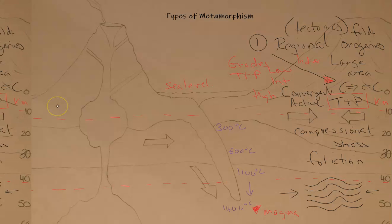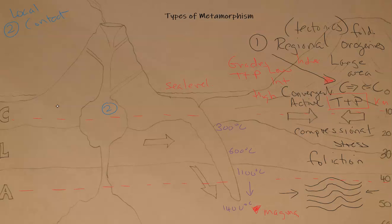Regional metamorphism is our main starting point and it occurs in orogenic and convergent plate boundary settings. Type Two is contact metamorphism — our first example of a local type. Contact metamorphism involves a volume of magma intruding into a pre-existing rock layer, mostly from below, pushed up by density and pressure — through decompression melting — and when the magma makes contact with the surrounding country rock, it causes metamorphic changes primarily through heat. Some pressure and fluids are also involved.